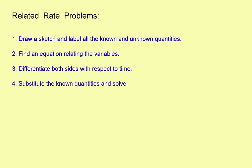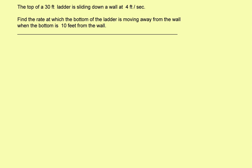Let's take a look at a different kind of problem. Here's the problem: you've got a 30-foot ladder that's leaning against the wall. The top of the ladder slides down at 4 feet per second. Find the rate at which the bottom of the ladder is moving away from the wall when the bottom is 10 feet from the wall.